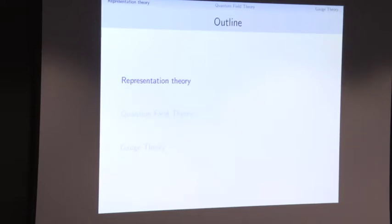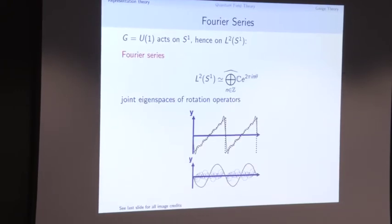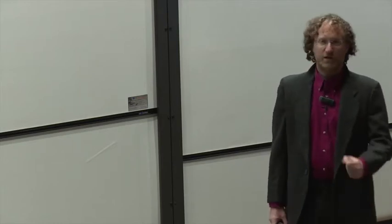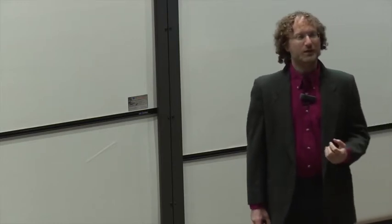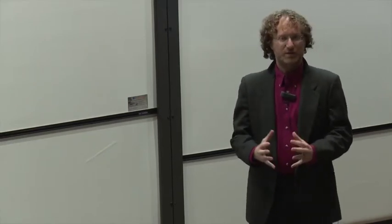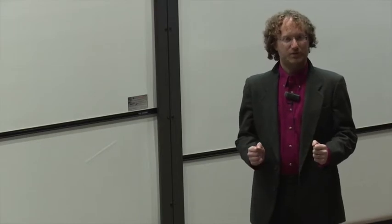Our first topic is a crash course on representation theory. For me, like a lot of subjects, it starts with Fourier series. We look at the circle group U(1) acting on the circle itself by rotation. This means we can take L² functions on the circle and decompose them into eigenspaces of all the rotation operators — picking out the functions that are eigenspaces with respect to circle rotation.